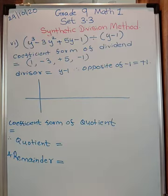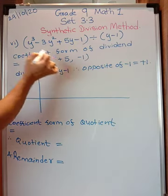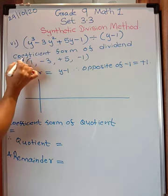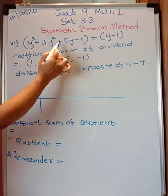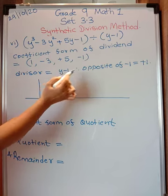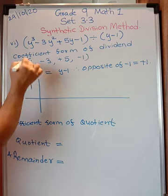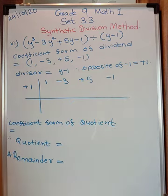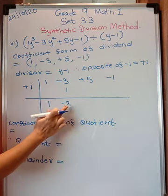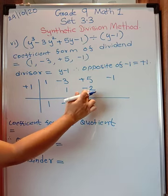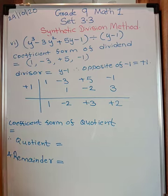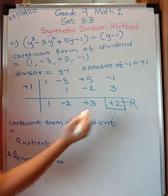Let's see the sixth problem. I have not written the index form here because it is already in index form: y raised to 3, y raised to 2, y raised to 1, and then a constant. So directly I have written the coefficient form of the dividend: 1, minus 3, plus 5, minus 1. The divisor is y minus 1, so the opposite of minus 1 is plus 1. Write plus 1 here. Now: 1 is written down. 1 into 1 is 1. Minus 3 plus 1 is minus 2. Minus 2 into 1 is minus 2. Plus 5 minus 2 is plus 3. 3 into 1 is 3. 3 minus 1 is plus 2. So the remainder is 2.